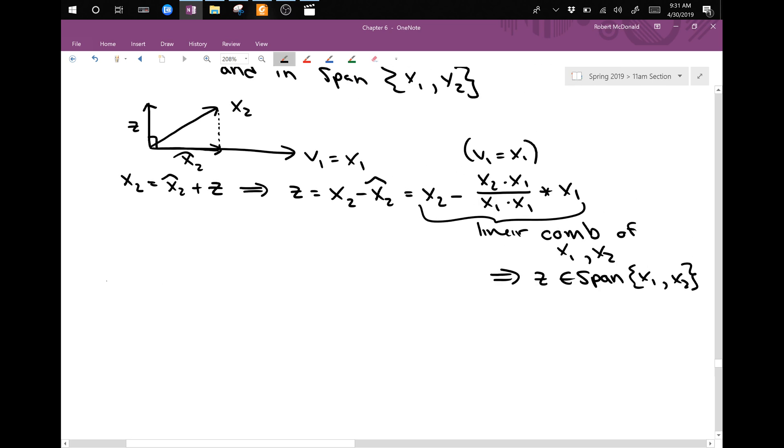And so we'll pick v2 to be z. And so actually, this is true in general, right? This is for any two vectors. This is true. We didn't actually use what the vectors were here.